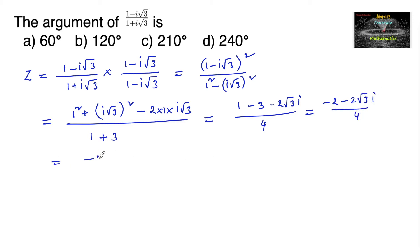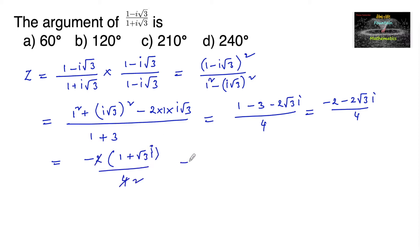Taking -2 common from the numerator, we get -2(1 + √3 i) / 4, which simplifies to z = -1/2 - (√3/2) i.